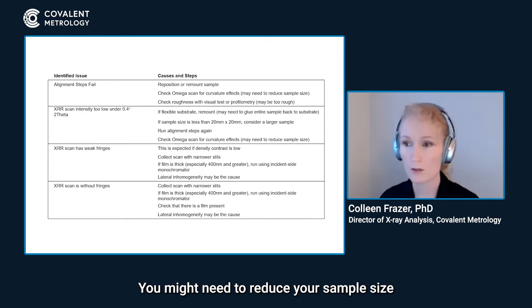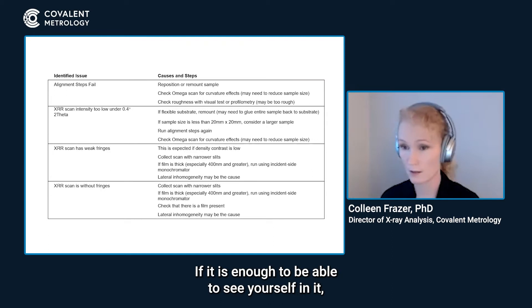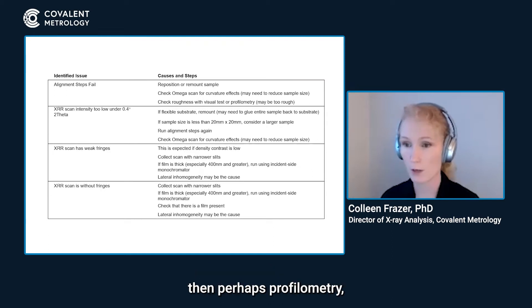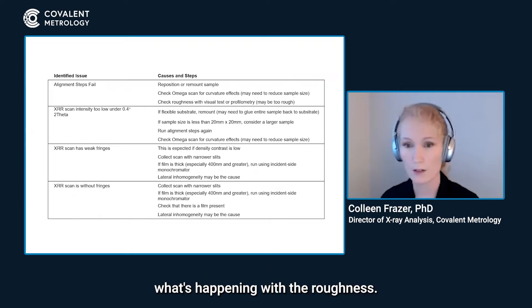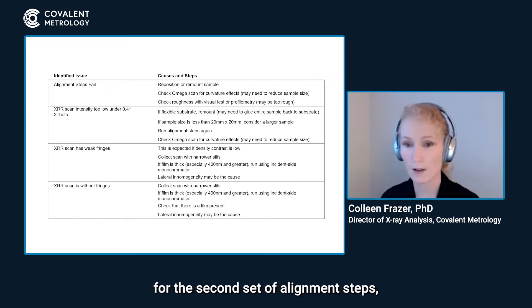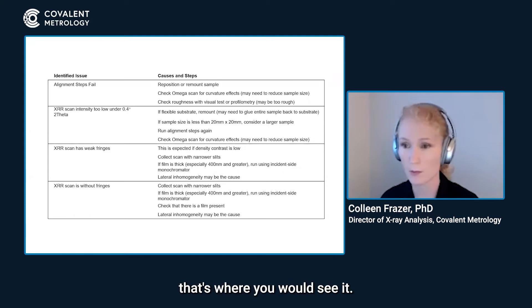You might need to reduce your sample size to reduce the curvature effects. For roughness, use a visual test or profilometry — just look at the surface. If it is reflective enough to see yourself in it, then profilometry or some other analysis can tell you what's happening with the roughness. Roughness can be so severe that for the second set of alignment steps at a fringe, you effectively don't see anything but the omega optimization.